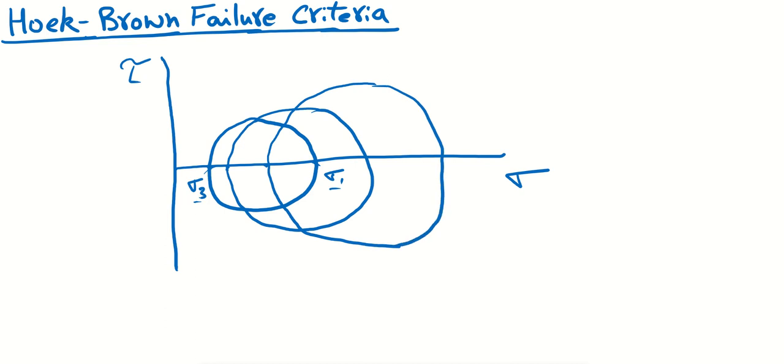Now our Mohr-Coulomb failure criteria was essentially if we were to draw a tangent or envelope for our Mohr circles here. This right here was the criteria that we discussed earlier, so this is Mohr-Coulomb. What you notice is the relationship or the equation for this line was for a straight line, so this is linear.